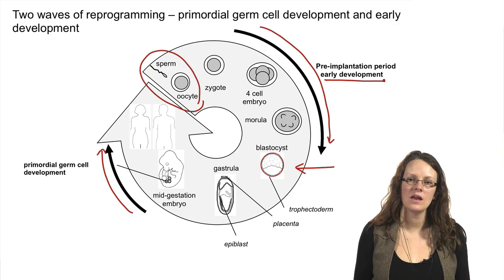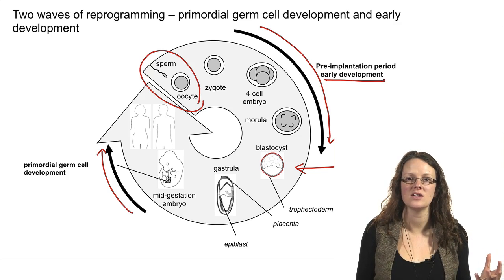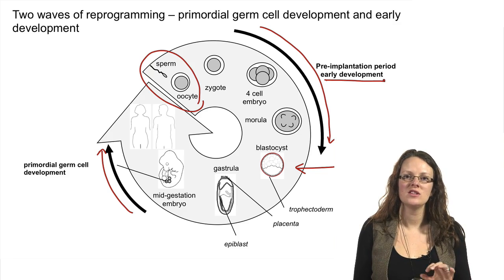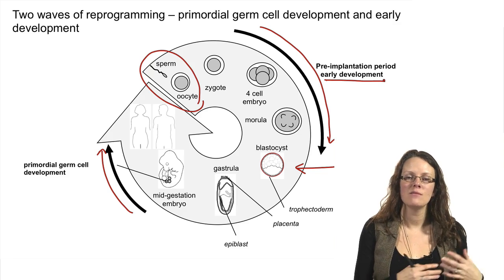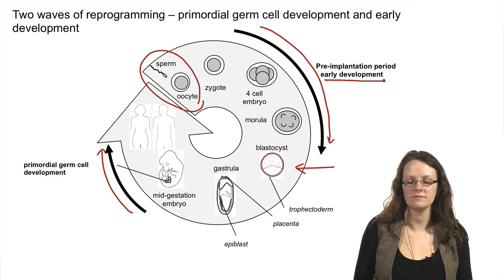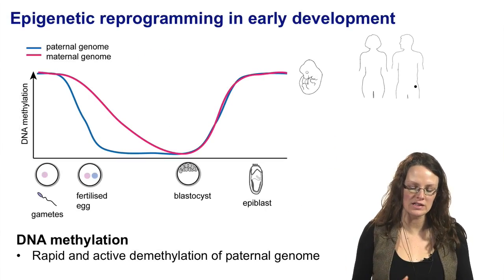If we look at the embryo that's developed to mid-gestation, we have predominantly somatic cells except for the primordial germ cells — the cells that will go on to become the germ cells, either the egg or the sperm, dependent on the sex of the embryo. This is the second phase of reprogramming. In these cells that will become the germ cells, you need to remove the somatic marks and lay down the particular germ cell chromatin and epigenetic signatures that are required.